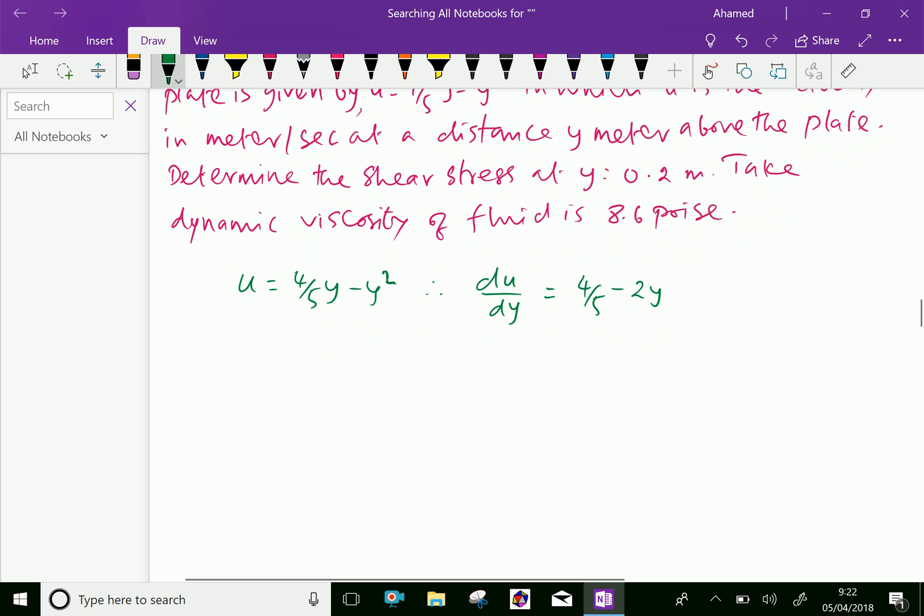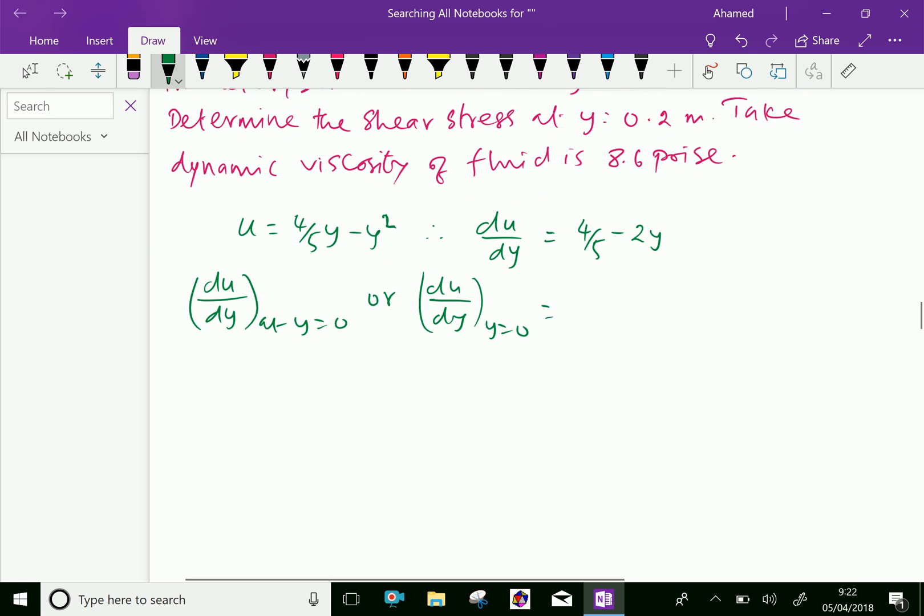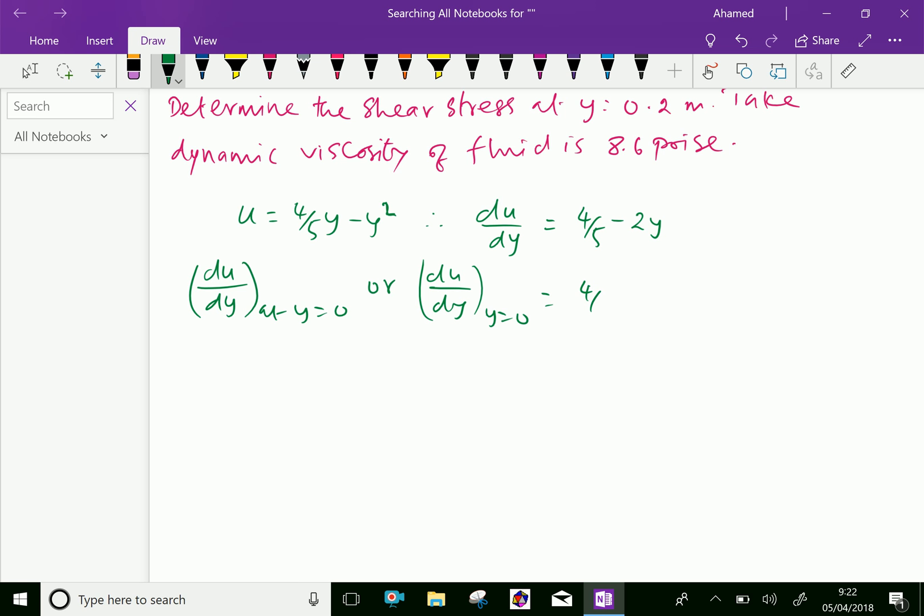Now, du/dy at y = 0. If you substitute y = 0 in du/dy, we can get it as only 4/5 minus 2 times 0, which gives 4/5, which is equal to 0.8.